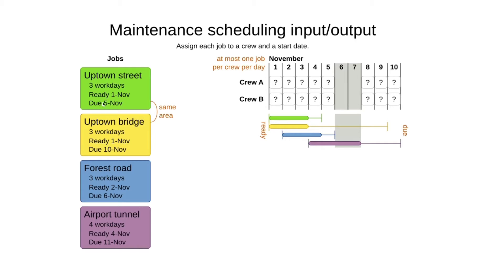So in this particular case for the uptown street job, that's ready the 1st of November and due by the 5th of November, which basically means it can start the 1st of November or the 2nd of November. We need to assign each of these jobs to a particular starting date, like the 1st of November or 2nd of November.